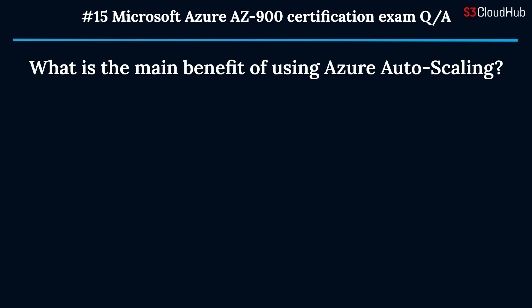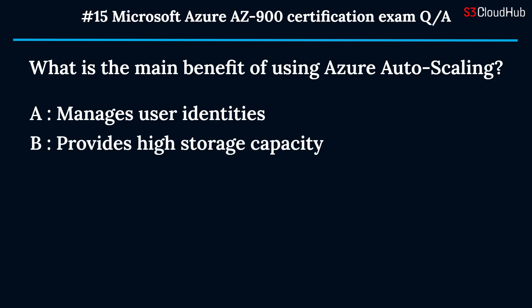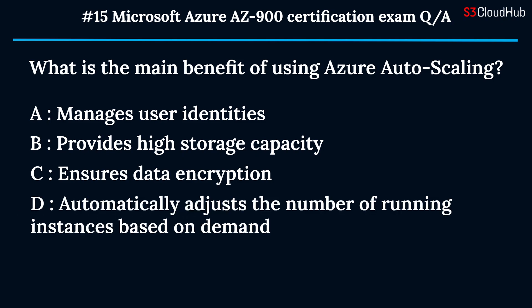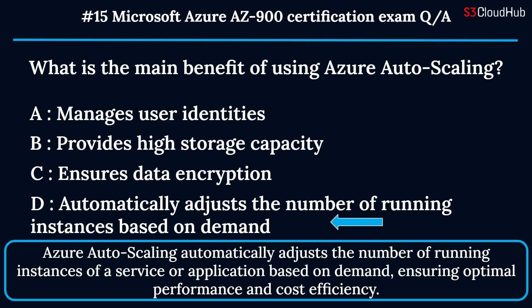The fifteenth question: what is the main benefit of using Azure Auto Scaling? Option A: manages user identities. Option B: provides high storage capacity. Option C: ensures data encryption. Option D: automatically adjusts the number of running instances based on demand. The correct answer is option D. Azure Auto Scaling automatically adjusts the number of running instances based on demand, ensuring optimal performance and cost efficiency.